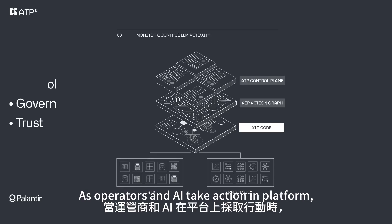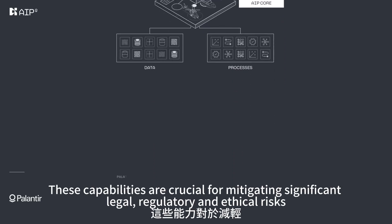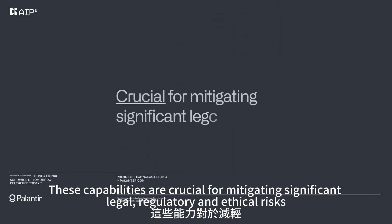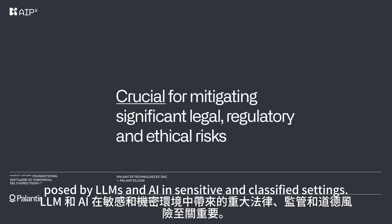As operators and AI take action in platform, AIP generates a secure digital record of operations. These capabilities are crucial for mitigating significant legal, regulatory, and ethical risks posed by LLMs and AI in sensitive and classified settings.